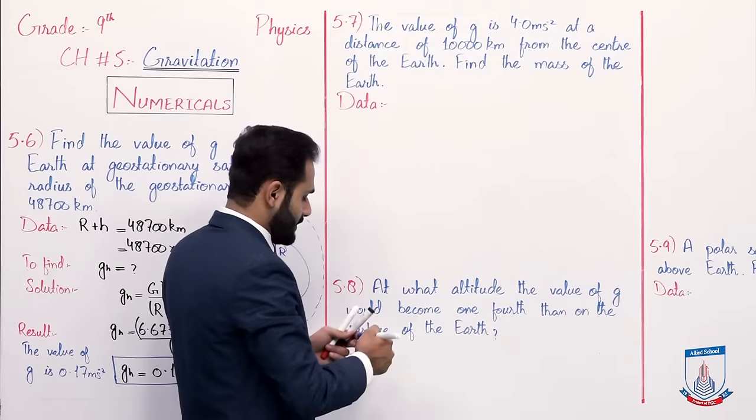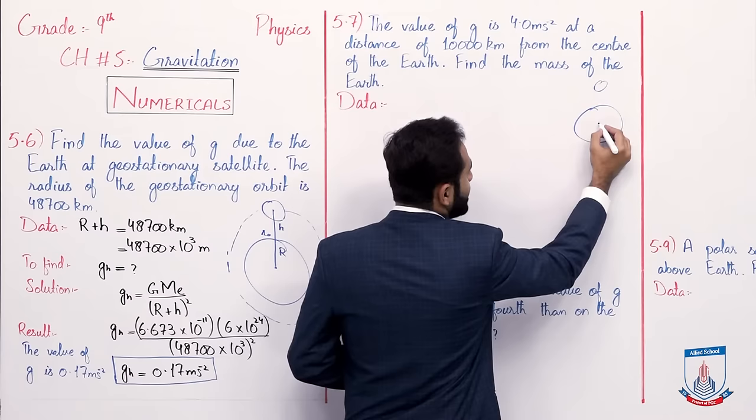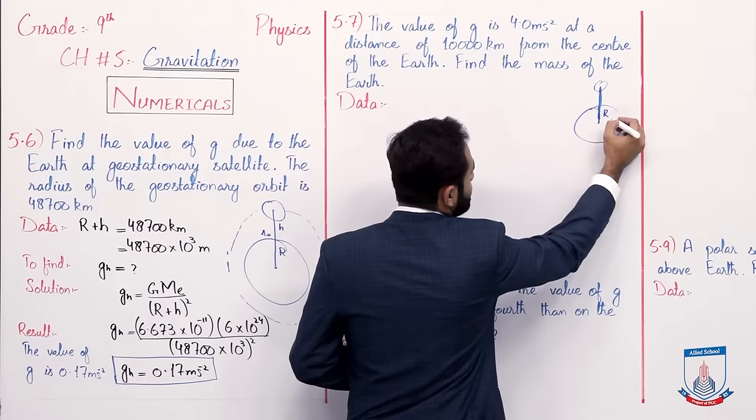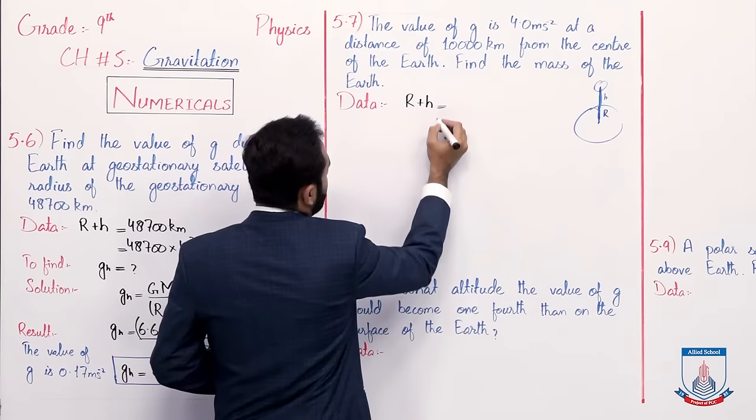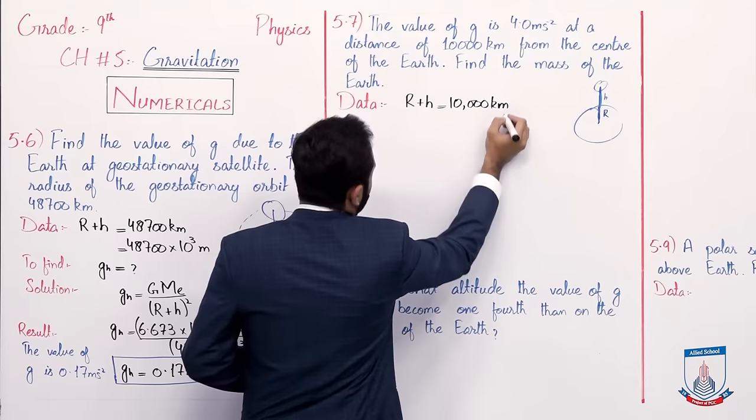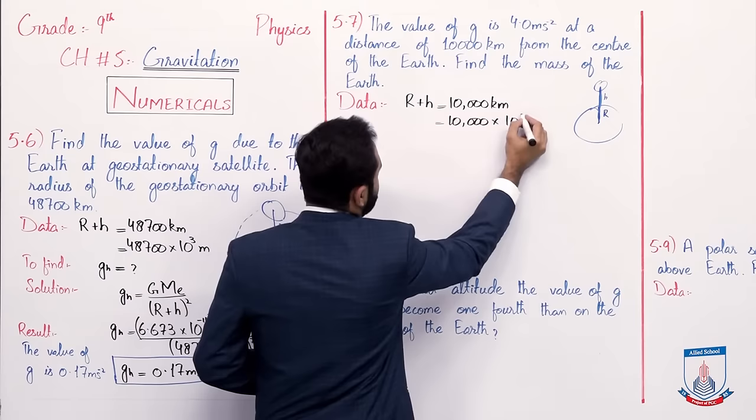Let's suppose this is the Earth and this is a satellite. The distance from the center of the Earth to the satellite is represented as radius r plus height h. So again r plus h is given, and that is 10,000 km. First of all we convert it: 10,000 multiplied by 10 to the power 3 meters.